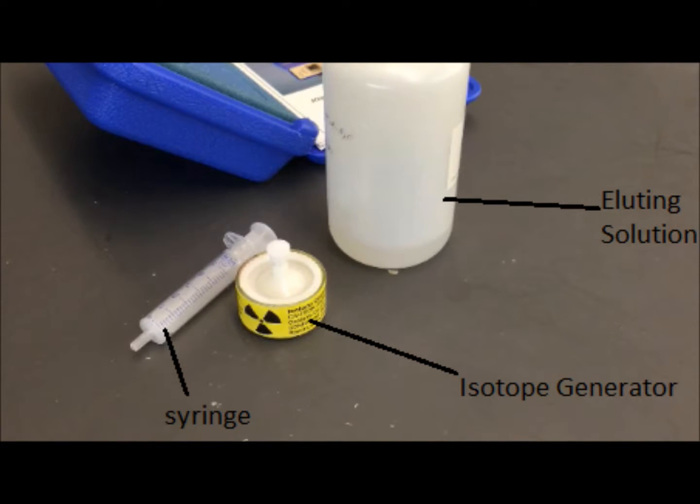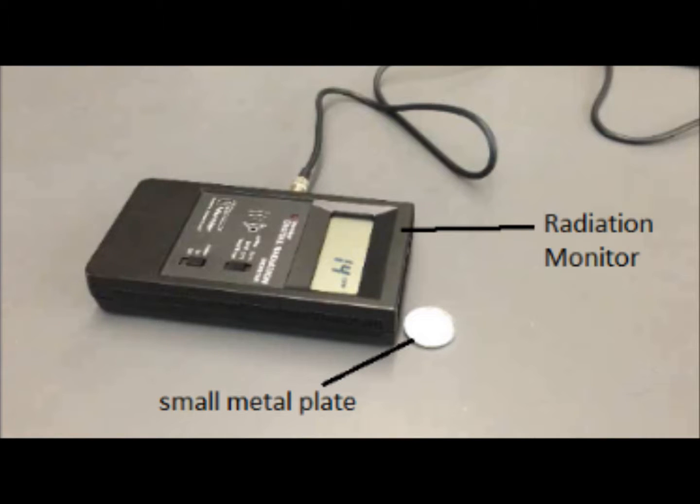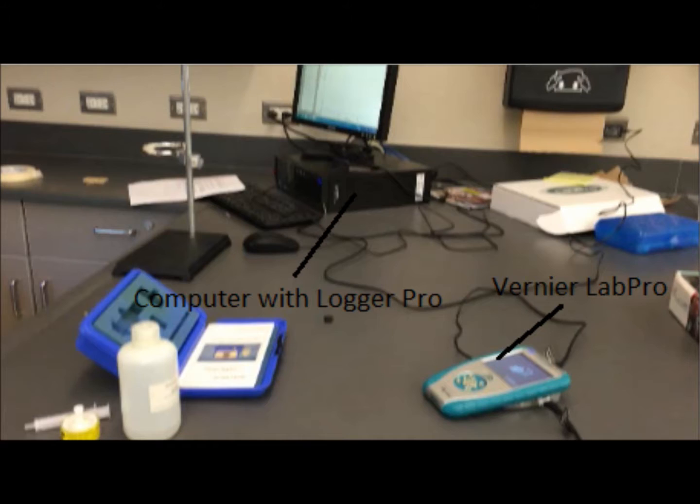You will need a syringe, eluting solution, cesium-to-barium-137 isotope generator, a small metal plate, a radiation monitor, a computer with Logger Pro installed, and Vernier Lab Pro.